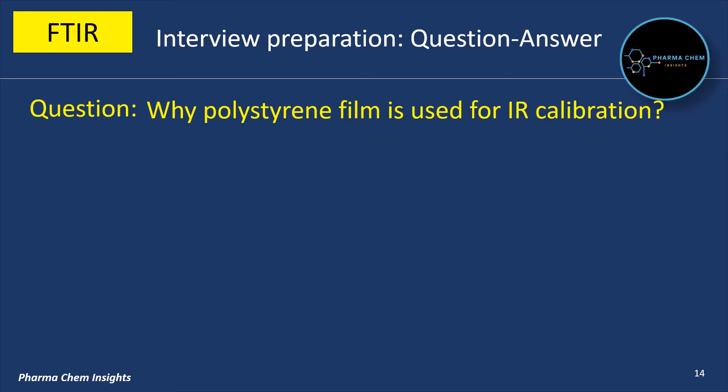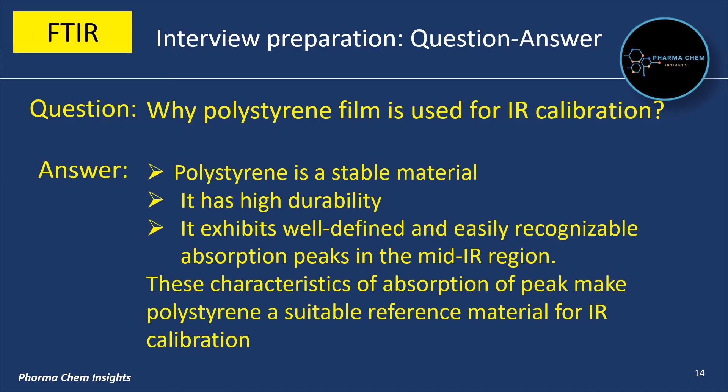Why is polystyrene film used for IR calibration? It is a stable material with high durability. It exhibits well-defined and easily recognizable absorption peaks in the mid-IR region. These characteristics make polystyrene a suitable reference material for IR calibration.